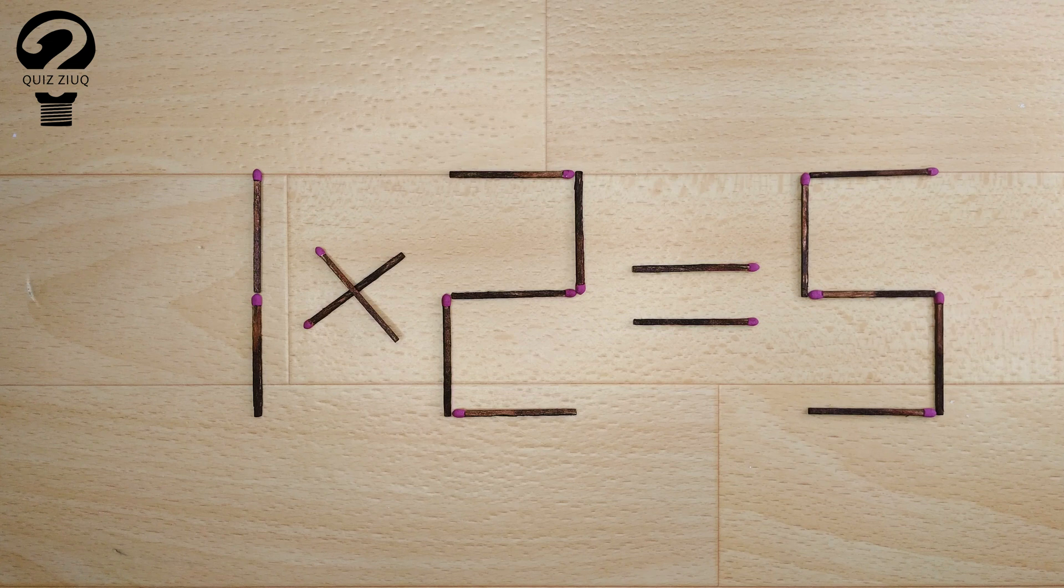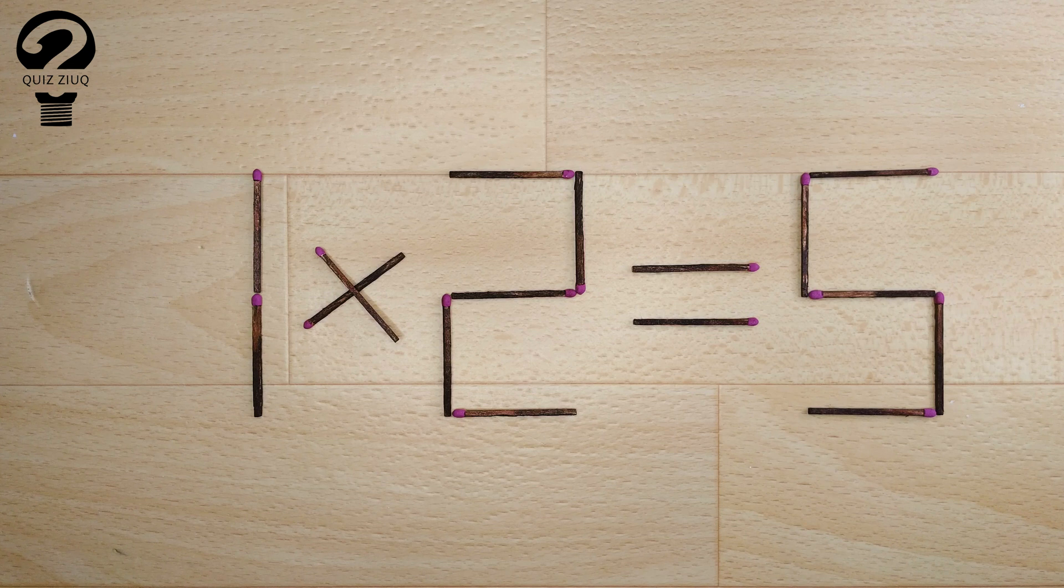Here's the next puzzle. We have this equation. 1 times 2 equals 5.